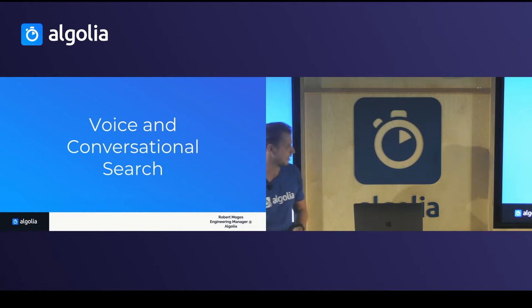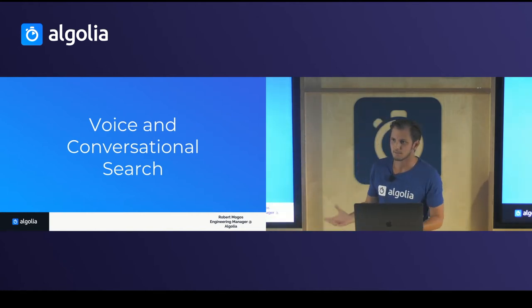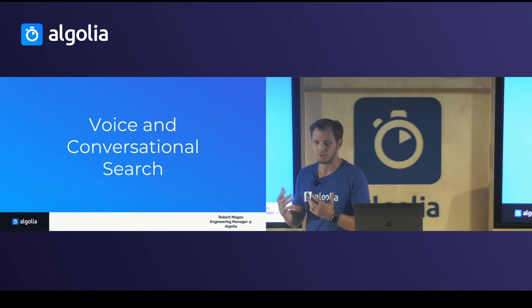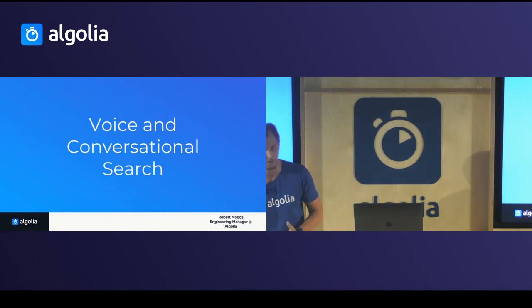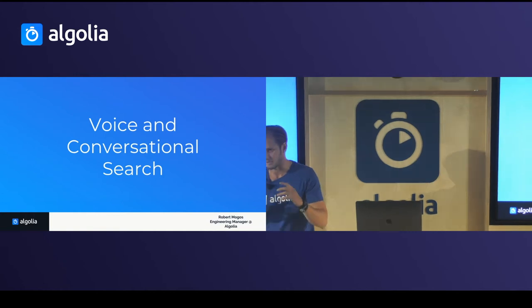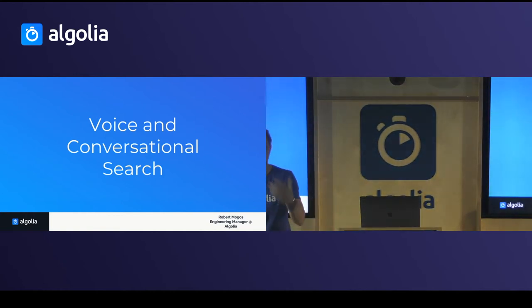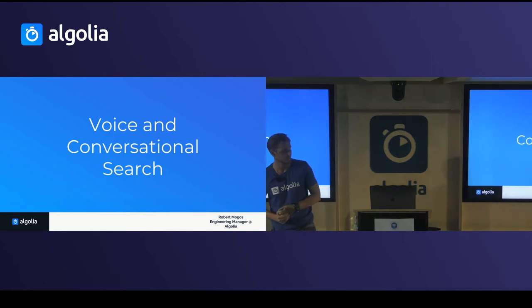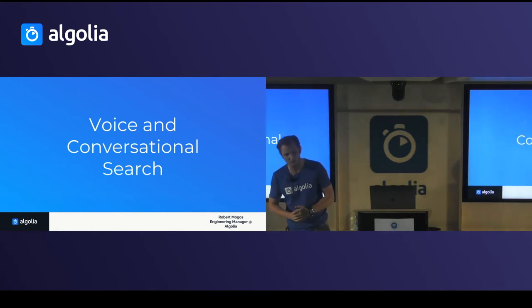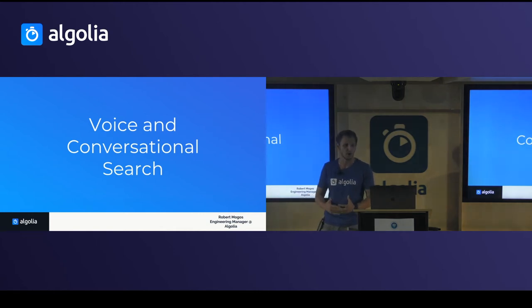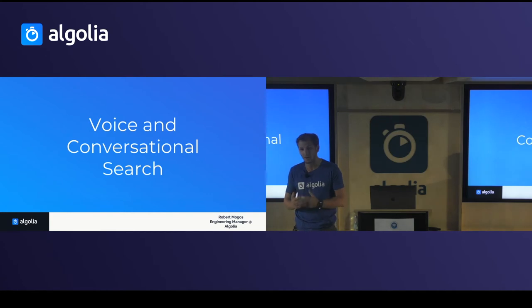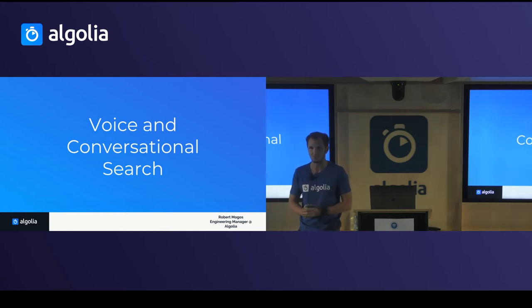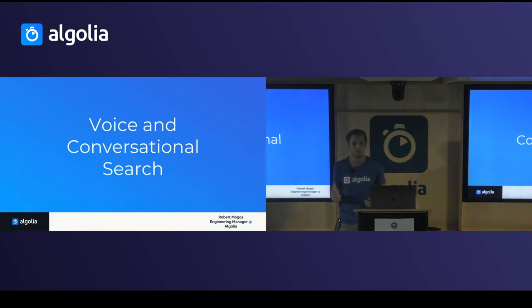Instead of rewriting everything from scratch — the search bar, table view, filters and so on — we provide that for you and you can just drag and drop it into your app. Algolia historically started with the search box and built up from there, but we've been seeing a lot of hype around AI, voice search, and NLP, so we started looking at what could be interesting to test in production and help our customers.